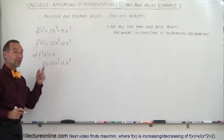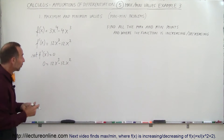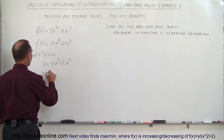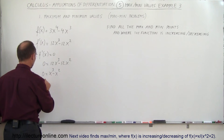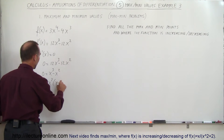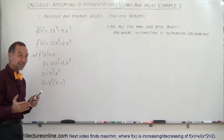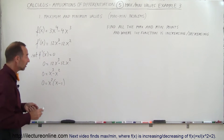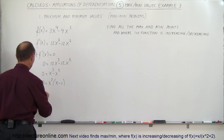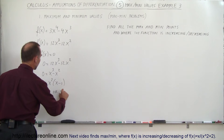You can factor out a 12 from the right side, divide both sides by 12, and we end up with zero equals x cubed minus x squared. We can factor out an x squared, so zero equals x squared times (x minus 1). When we multiply two things together and get zero, that means either x squared equals zero or x minus 1 equals zero, which means x equals zero or x equals 1.